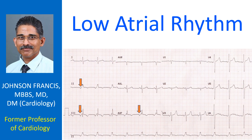ECG showing negative P waves in inferior leads 2, 3, and AVF. A superior P wave axis means that the atrial activation is proceeding from below upwards. This occurs when the focus is in the low atrium — low atrial rhythm or coronary sinus rhythm.